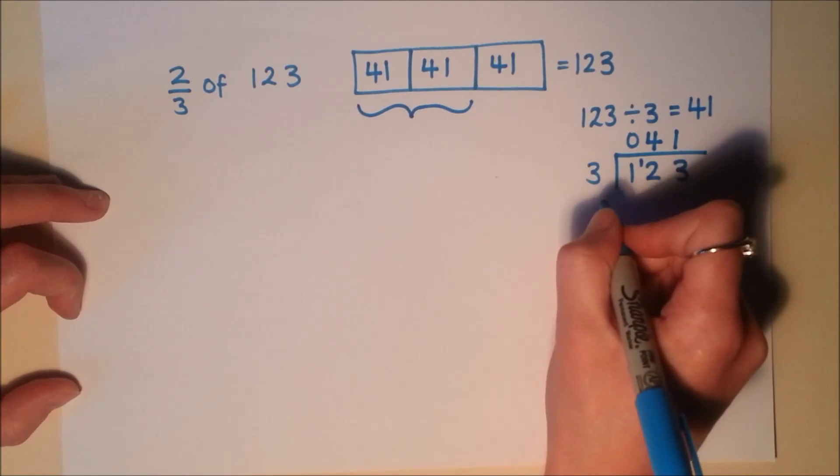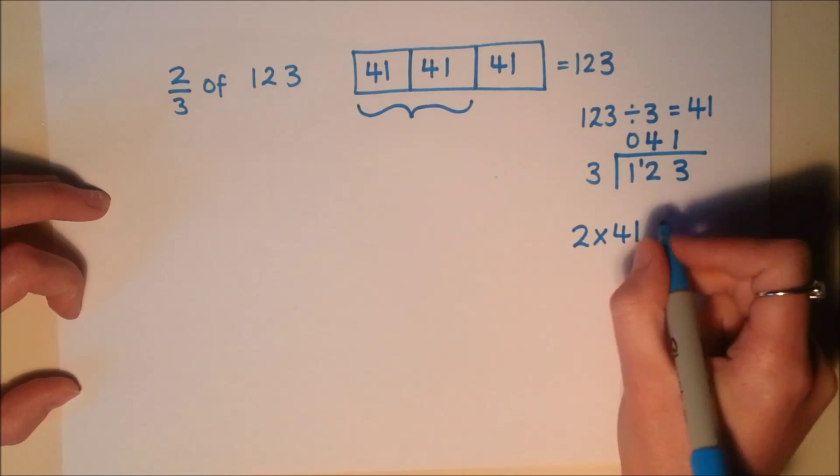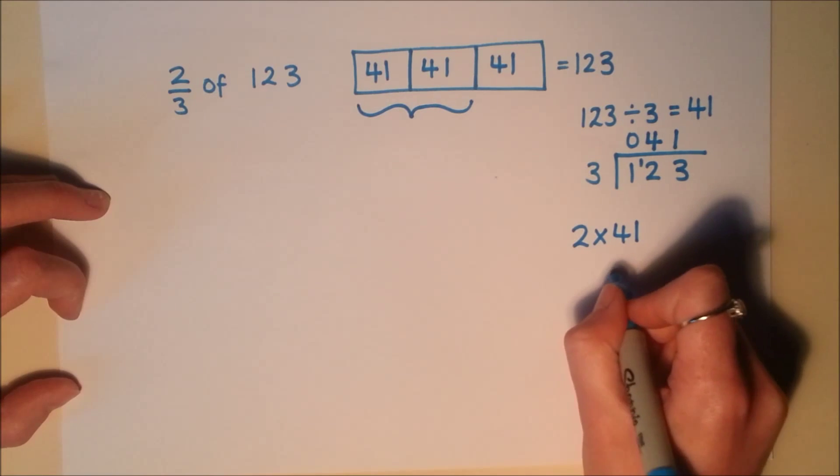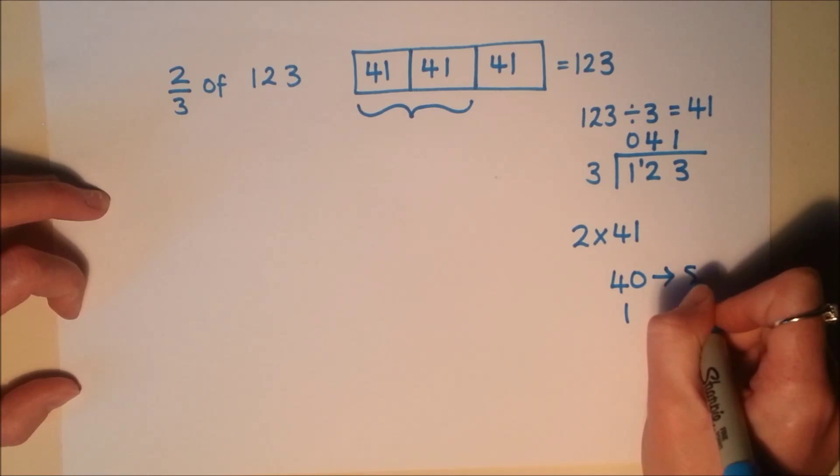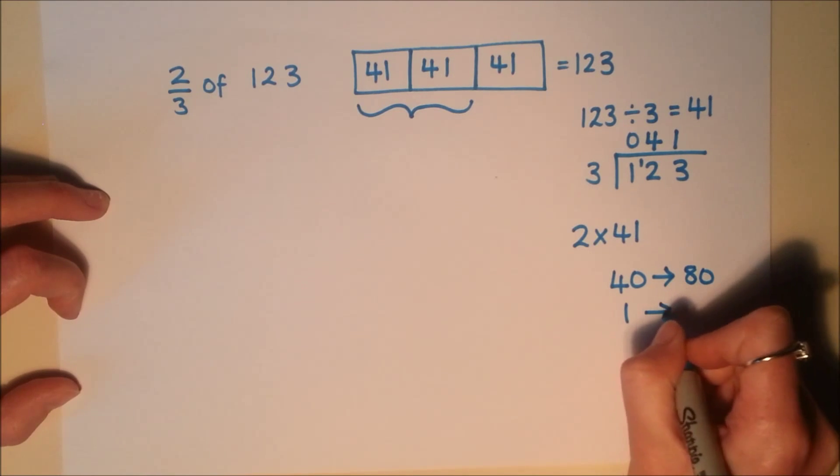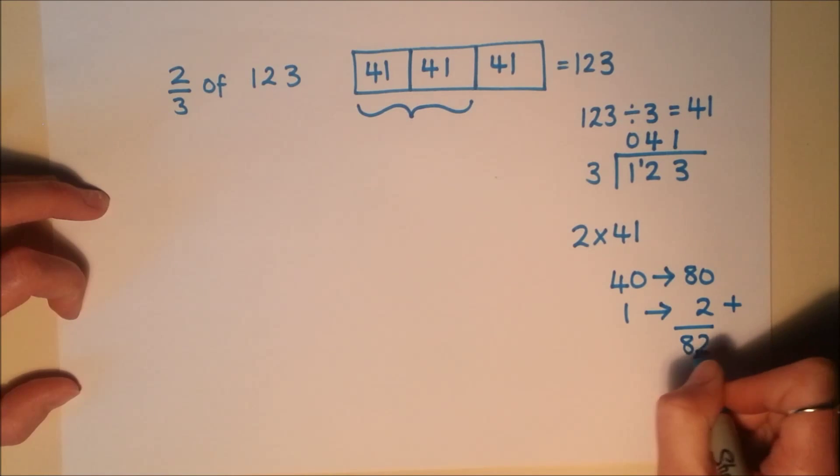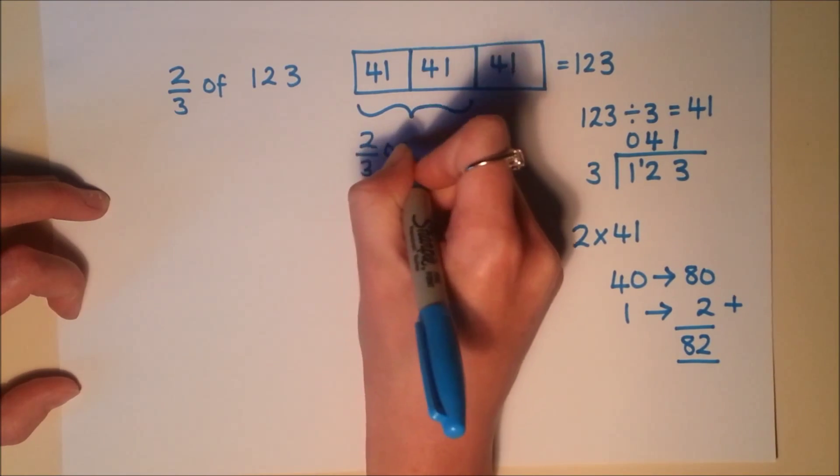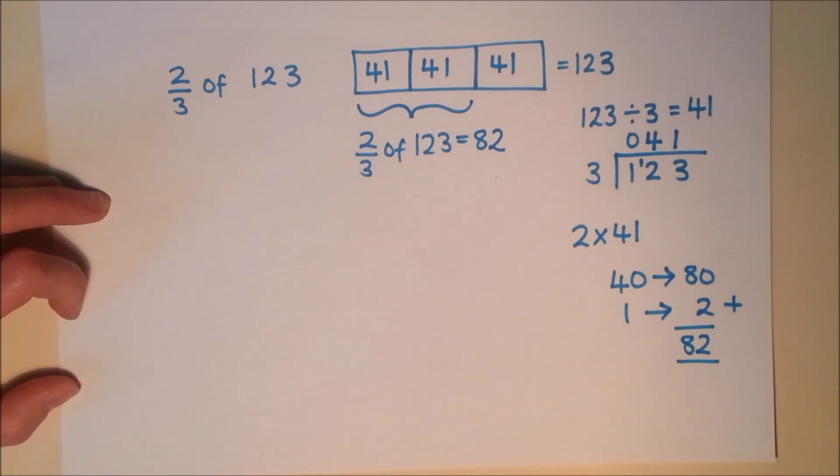So the calculation I'm going to be doing to work this out is 2 times 41. Now, doubling a number is quite easy to do. I'd probably split this into tens and units. So I'd split that into 40 and 1. Double 40 is 80. Double 1 is 2. Add those together. That gives me 82. So I know that 2 thirds of 123 is 82.